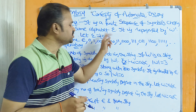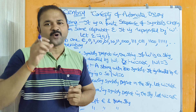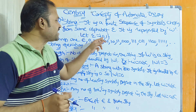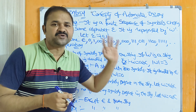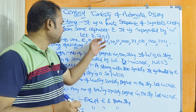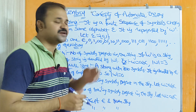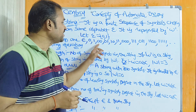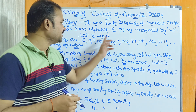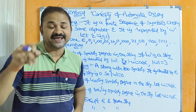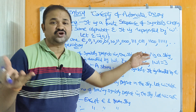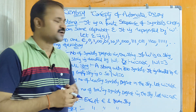Let sigma equal to {0, 1}. Then the possible strings from the alphabet are: if you take 0 occurrences of the input symbols then we will get epsilon. If you take one occurrence then one string is 0 and another string is 1. If we take two occurrences then we will have four combinations: 00, 01, 10, 11. If we take three occurrences then we will get eight strings — 2 power 3 — like 000, 001, and so on. Likewise we can take n number of strings.